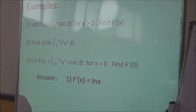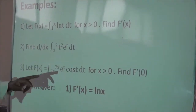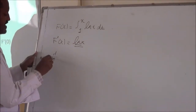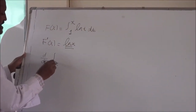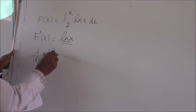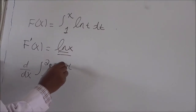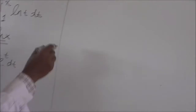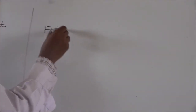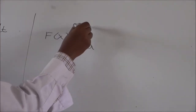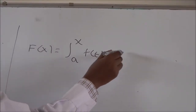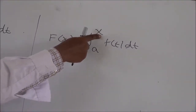The second example: find the derivative of the integral from x to 2 of t² eᵗ dt. The question is to find the derivative with respect to x of the integral from x to 2 of t² eᵗ dt. As you remember, the Fundamental Theorem of Calculus 1 applies when capital F(x) is written as the integral from a constant a to x of f(t) dt — where the lower limit of integration is constant and the upper limit is the variable.